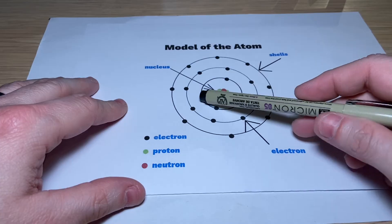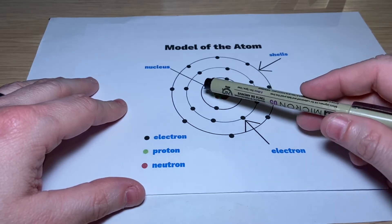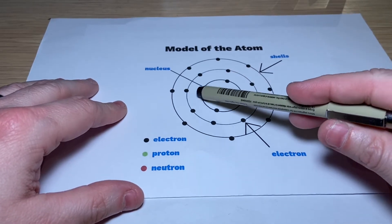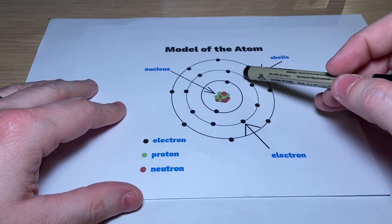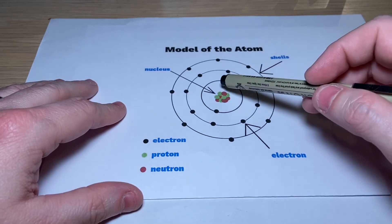Now, also, you see these electron configurations, right? So you see these shells around here. And these shells basically tell you how many electrons are in a specific shell.